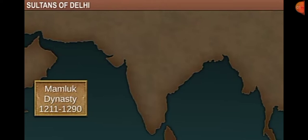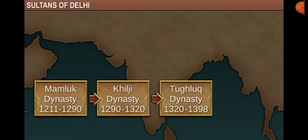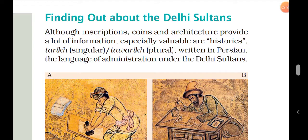From 1206 to 1526, Delhi was ruled by many rulers of Muslim dynasties, and they all preferred the title of Sultan. This period of history came to be known as the Delhi Sultanate. There are many mediums to find about this history, including inscriptions, coins, and architecture, which provide a lot of information.